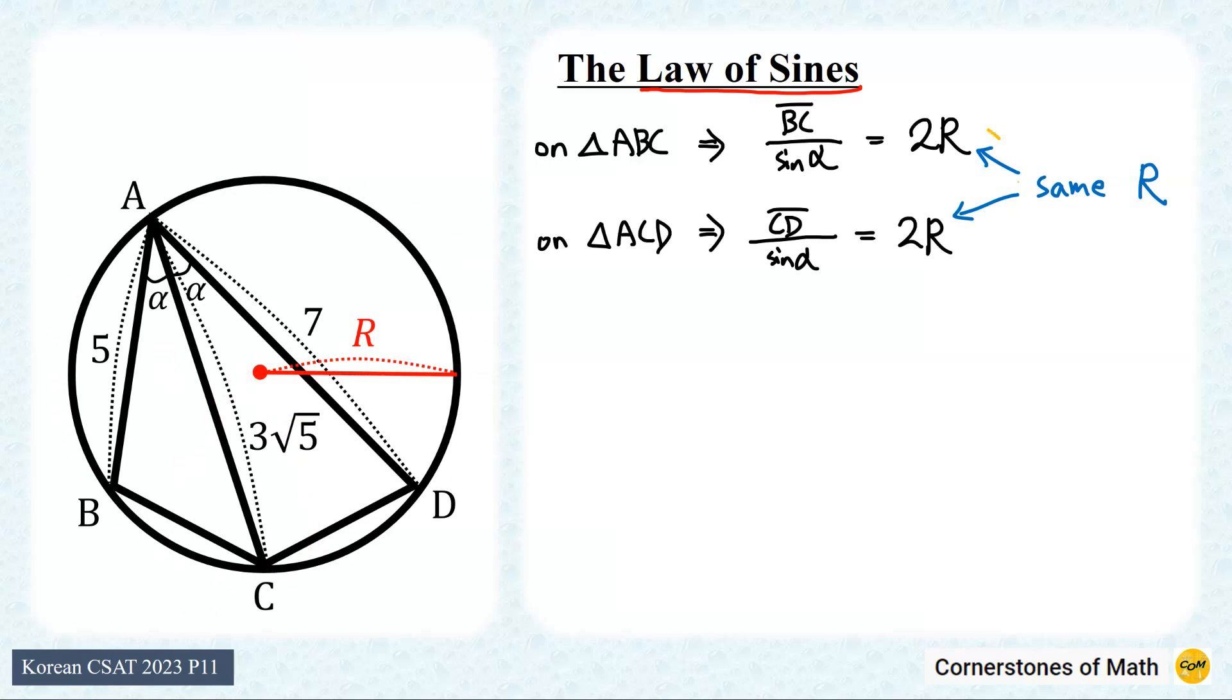Also, from these two relations, we can find out that length BC equals length CD. So let's just call it X. So these lengths are both X.